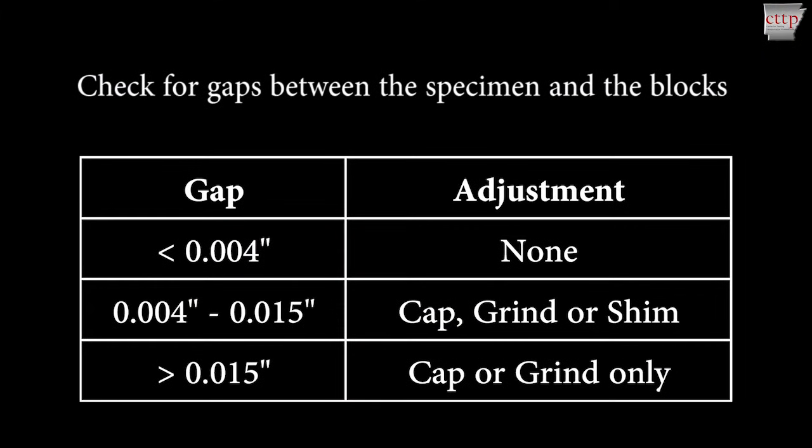Check for gaps between the specimen and the blocks. If there are no gaps less than 0.004 inches, then no adjustments need to be made. If the gap is between 0.004 inches and 0.015 inches, then you must cap, grind, or shim the beam.